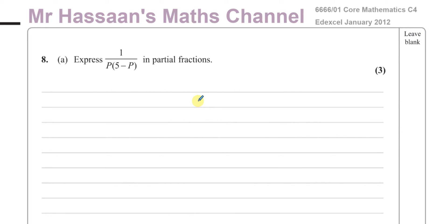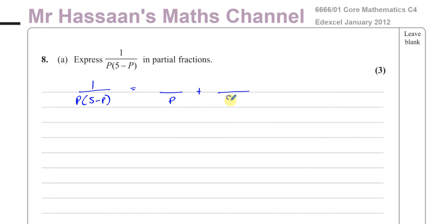Partial fractions is when you take a fraction and split it up into separate fractions — it's like the opposite of adding fractions together. We have the fraction 1 over P times (5 minus P), and we want to split it into two separate fractions because there are two linear factors in the denominator. So it's going to be a constant over P plus another constant over (5 minus P).